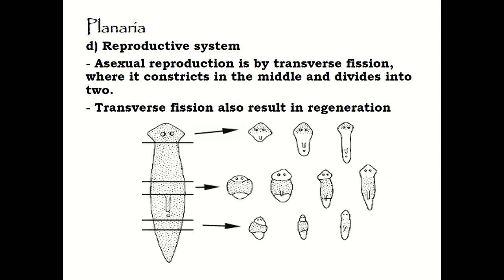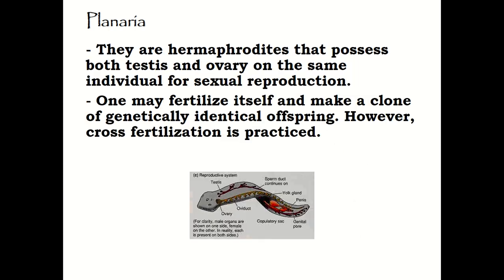Turbellaria also have a reproductive system in which they reproduce asexually by transverse fission — the body constricts in the middle and divides into two, with transverse fission also resulting in regeneration. They are hermaphrodites, meaning they have two sexes in one body, possessing both testes and ovaries in the same individual for sexual reproduction. One individual may fertilize itself to make a clone of genetically identical offspring; however, cross-fertilization between two individuals is also practiced.